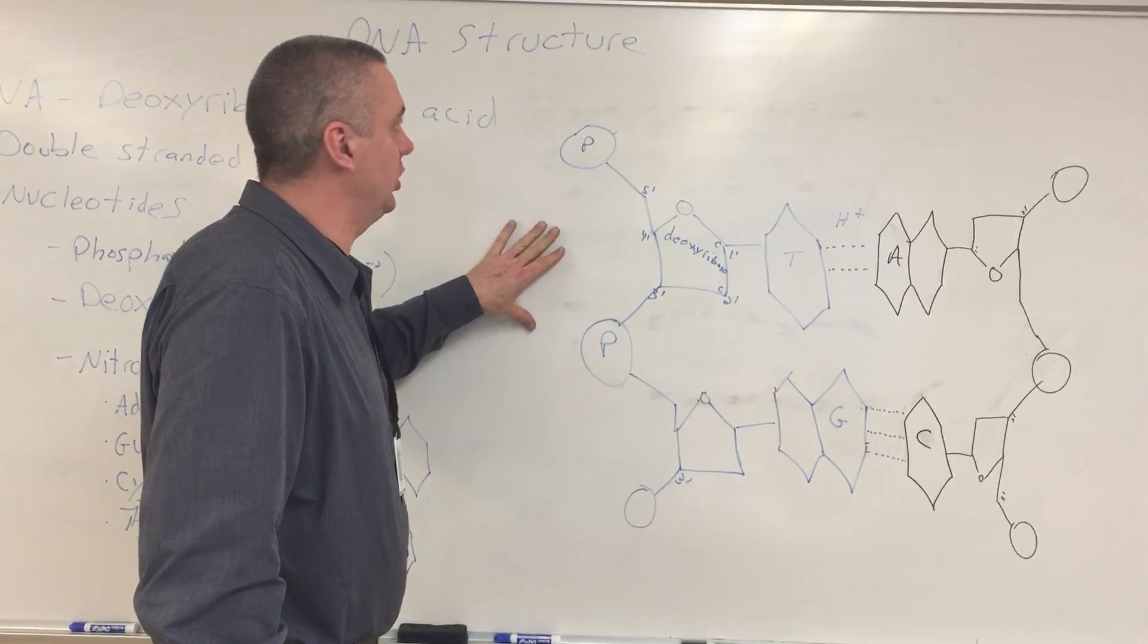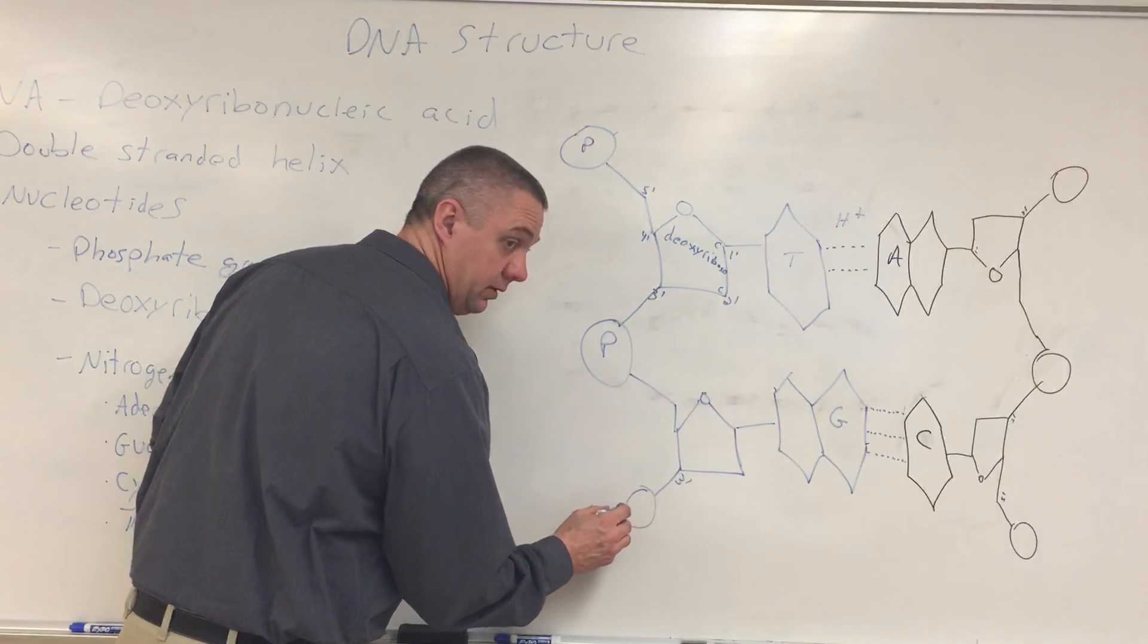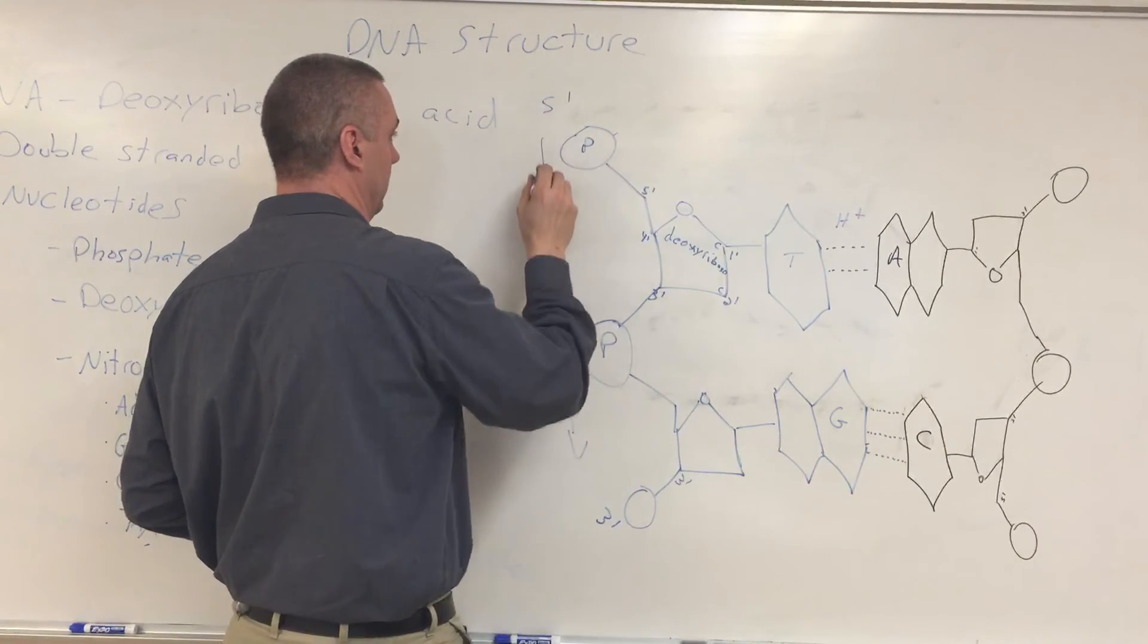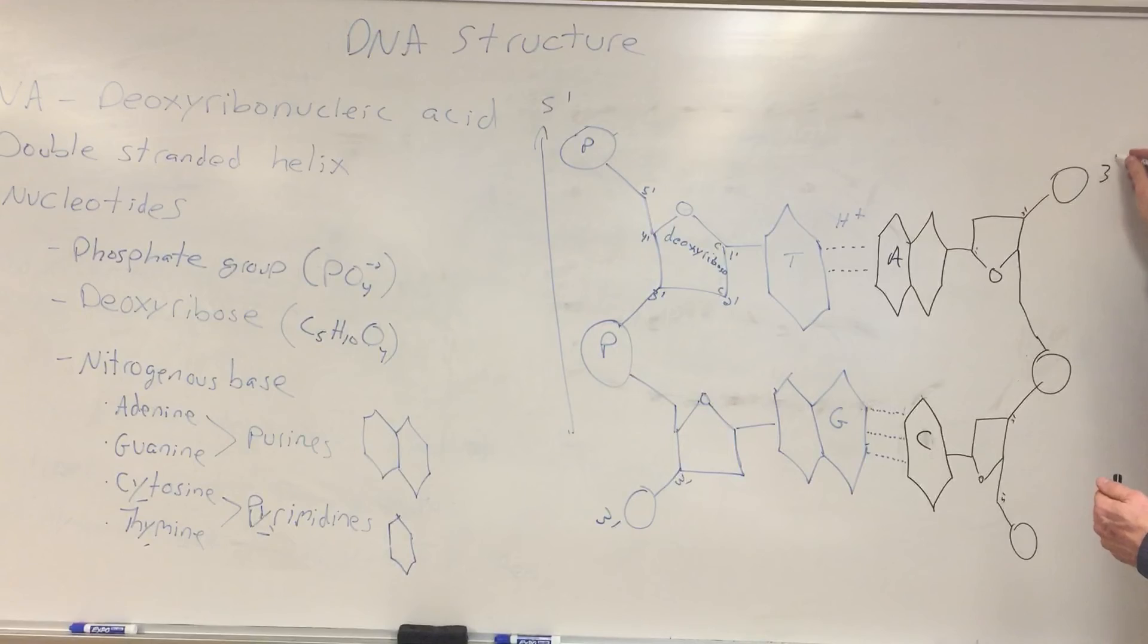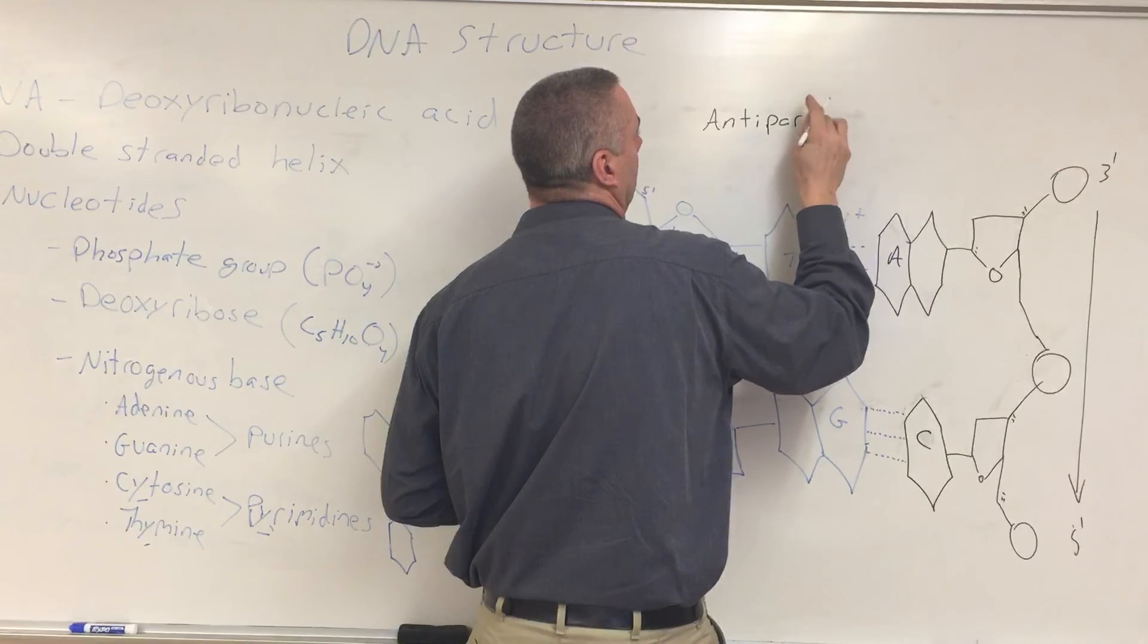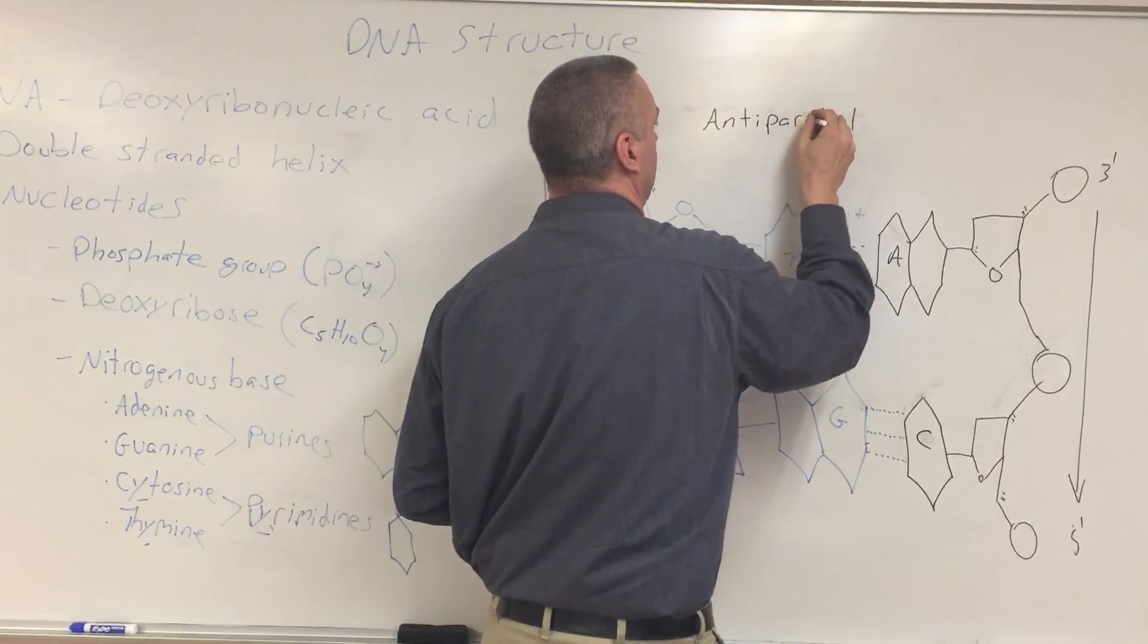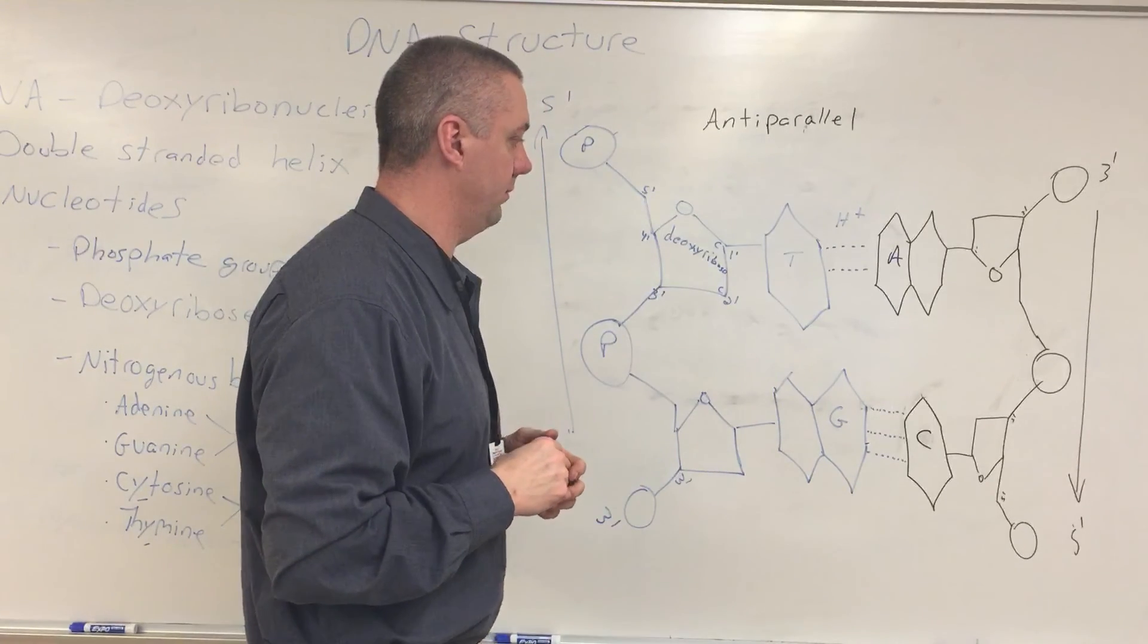So that is the basic structure of DNA. This strand runs three prime to five prime. And this one over here though is running three prime at the top and five prime at the bottom. So, this is why we refer to the strands as being anti-parallel. The strands are anti-parallel. Got it?